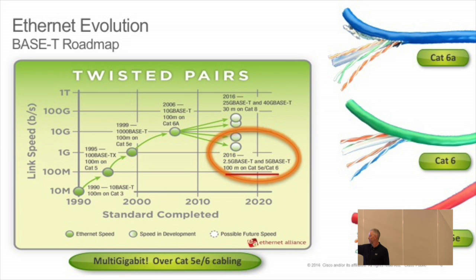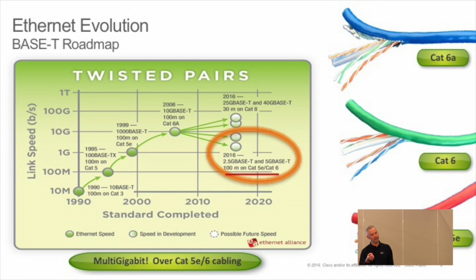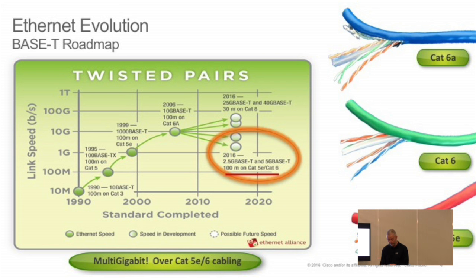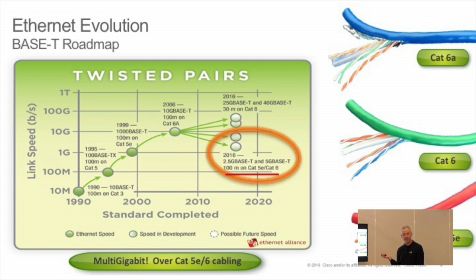Also going on right now, we have 25GBase-T and 40GBase-T. Those are really being done for the data center, with reaches set to 30 meters — middle of row, end of row — on Category 8. But what I really want to talk about is that in 2016, alongside 25G and 40G, we're also doing 2.5 and 5G, specifically to run them on Cat5e and Cat6.